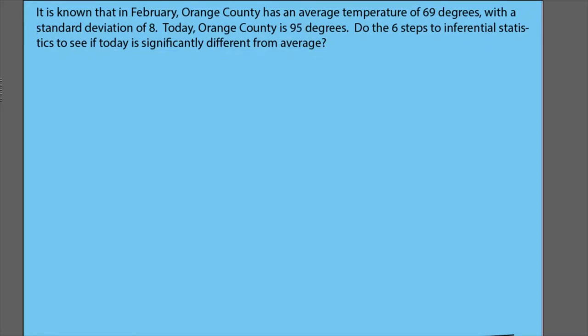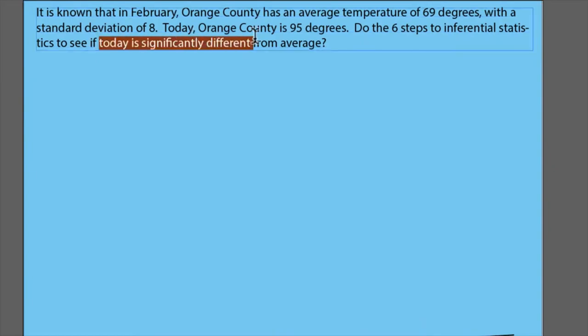So it is known that in February, Orange County has an average temperature of 69 degrees with a standard deviation of 8. Today in Orange County, it is 95 degrees. Do the six steps to inferential statistics to see if today is significantly different from average.